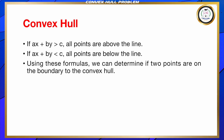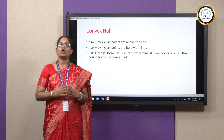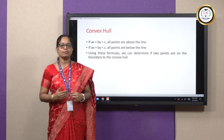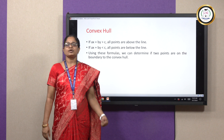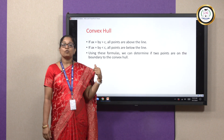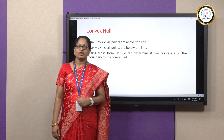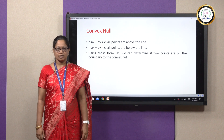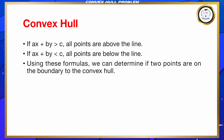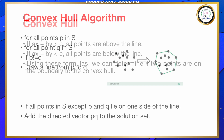We have to determine if two points are on the line, above the line, or below the line. We all know that the expression for a straight line is AX plus BY plus C equal to 0. If AX plus BY is greater than C, then the points should be above the line. If AX plus BY is lesser than C, then the points fall below the line. Using these formulas you can determine if the points are on the boundary, above the line, or below the line.